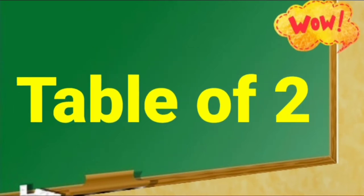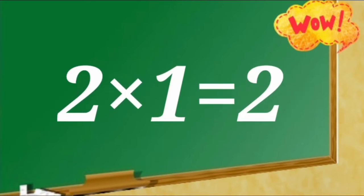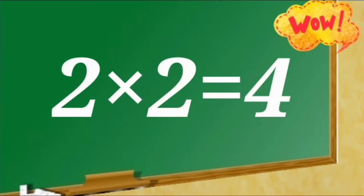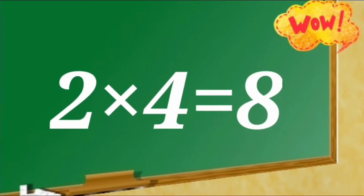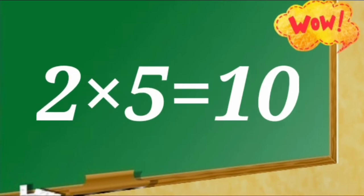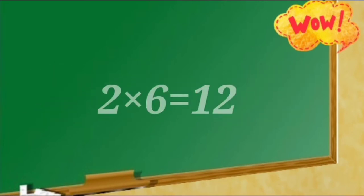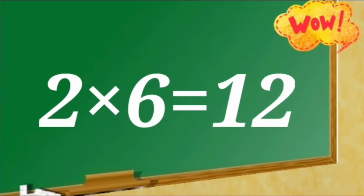Table of 2. 2 ones are 2. 2 twos are 4. 2 threes are 6. 2 fours are 8. 2 fives are 10.